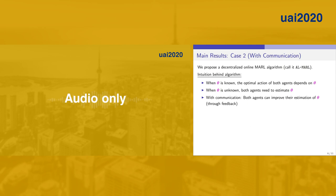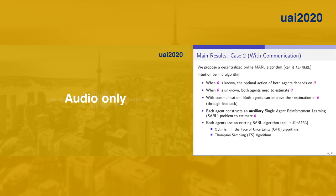Our approach for the estimation of theta is that each agent constructs an auxiliary single-agent RL problem. Both agents then use one of the existing single-agent RL algorithms, which we call AR-Solve, to solve this single-agent RL problem. Basically, what we have in our ALMAR algorithm is a single-agent RL algorithm used as a subroutine.